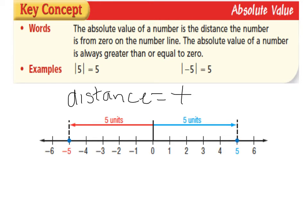Remember that absolute value is based on the distance a number is from zero. Also remember that the absolute value sign is two bars — it is not the number 11. Some students do have difficulty recognizing this, so be very careful.